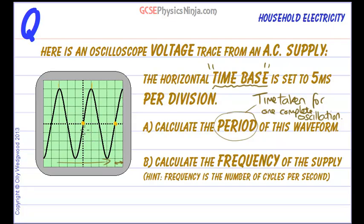So how many divisions have we got for one complete oscillation? Well counting here we've got 1, 2, 3 and 4. Right.